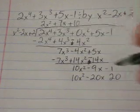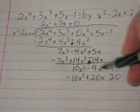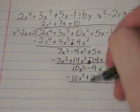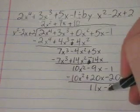Then you have to change all the signs. So minus, plus, minus. Cancels out. That gives you 11x minus 21.